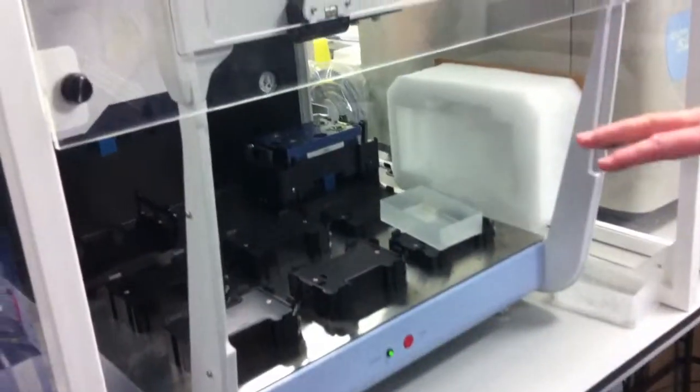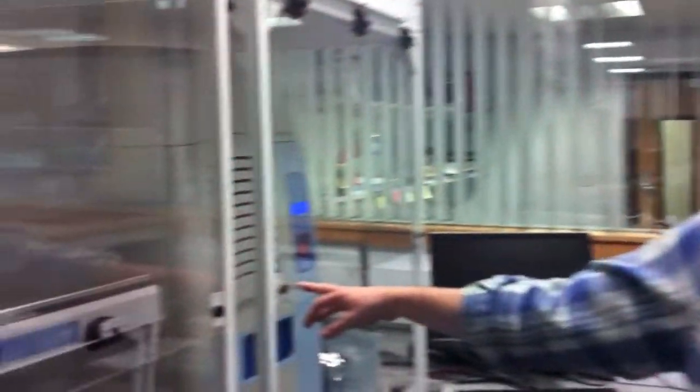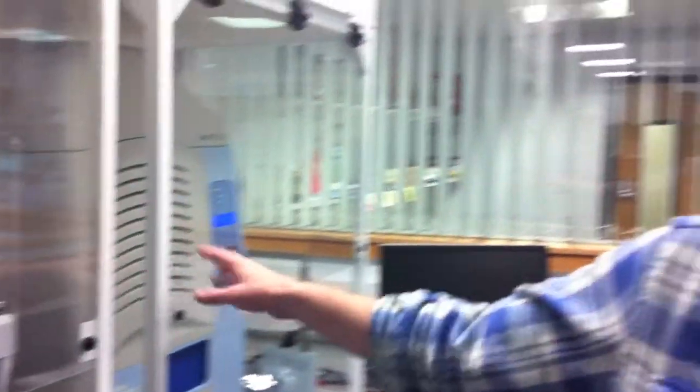So the workflow would then come to these two machines. This is just a little Janus robot, and essentially what it does is it makes duplicates of these plates. This piece of kit is the Echo. It's probably one of the most expensive pieces of kit, but again we managed to get quite a good deal.